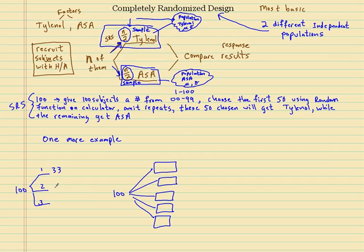So then what you do is you do thirty-three, thirty-three, and thirty-four, any combination. So you don't need the same amount of people in every single treatment group. So that's it for the first completely randomized design. Make sure you watch the next one. Thanks.